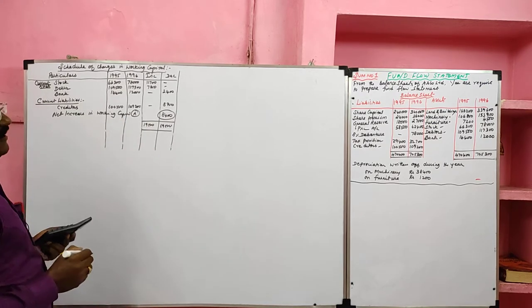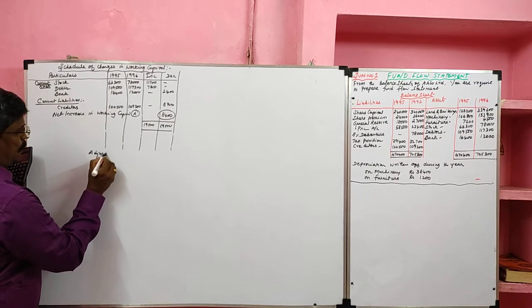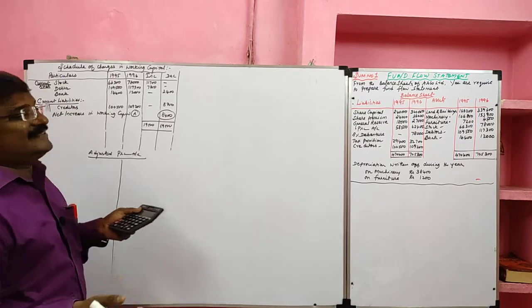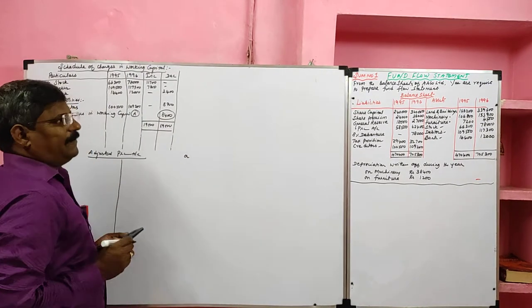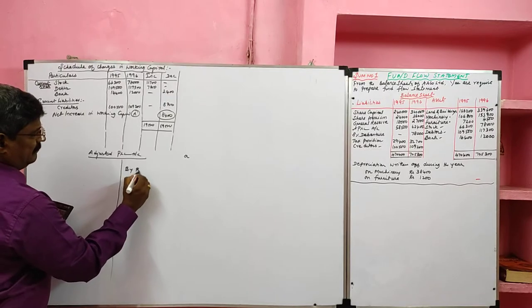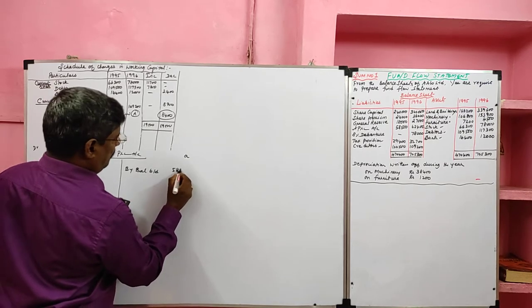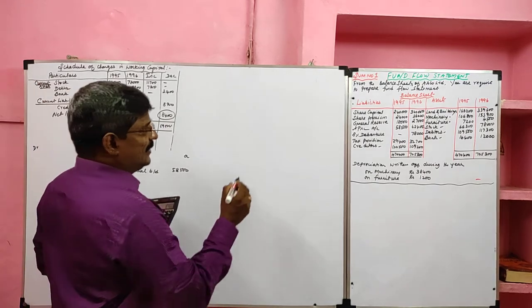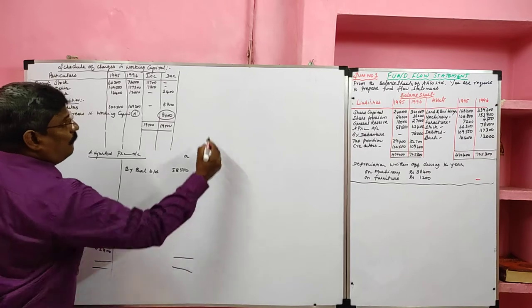The net increase in working capital of 8,400 will go to the application side. Now we prepare the adjusted profit and loss account. Items other than current assets and current liabilities are considered for the adjusted profit and loss account. First, the profit and loss account: opening balance credited by balance brought down 58,500; closing balance 62,400.